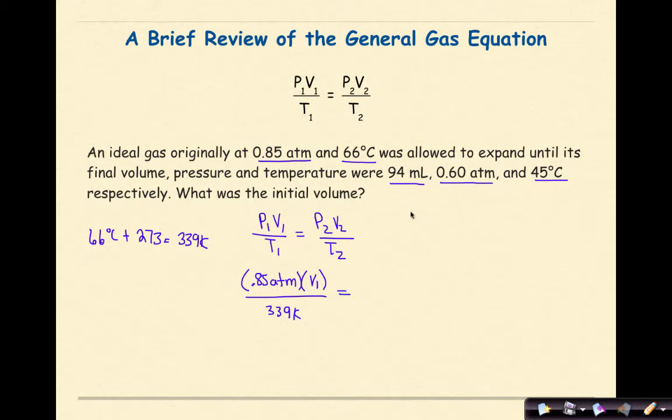My P2 is 0.60 atmospheres. My V2 is 94 milliliters. My T2 is going to be 45 degrees Celsius. So 45 degrees Celsius plus 273 is going to equal 318 K. So I am going to put that on the bottom.